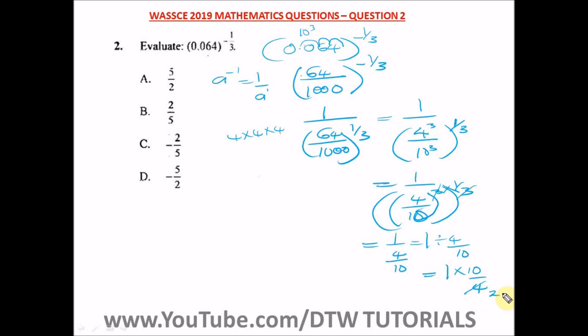2 can go here 2 times, and 2 can go here 5 times. So our final answer here is 5 over 2. So this is how we can evaluate this particular question. So our answer is 5 over 2, and our right option here is option A.